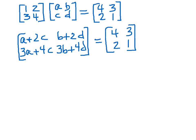So that means that this has to be equal to 4, this has to be equal to 3, this has to be equal to 2, and this has to be equal to 1. So that gives me 4 equations.